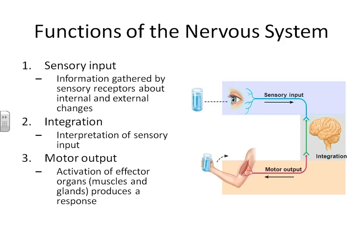Our nervous system is really separated into three major functional parts: the sensory portion, the area where integration occurs, and then the motor portion. We separate the nervous system this way to make sure you realize that even though these different parts are composed of the same type of material, they really have a different job to do.